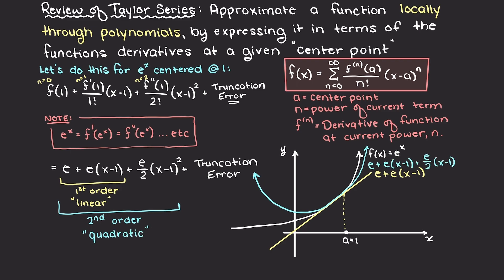If we were to continue, a third order would give you a cubic. As you can see, within a small range around our center point, we have a very good approximation. However, when we deviate too far from our center point, our approximation becomes worse.